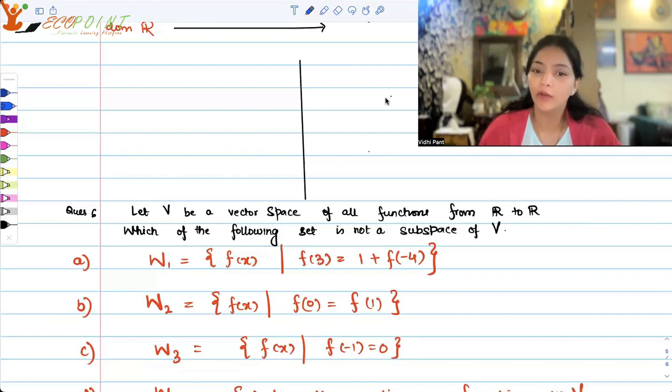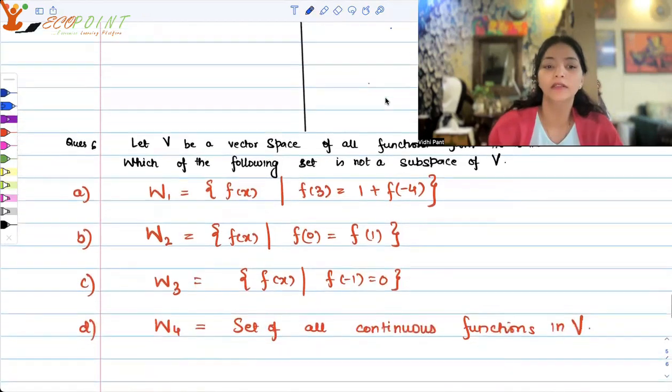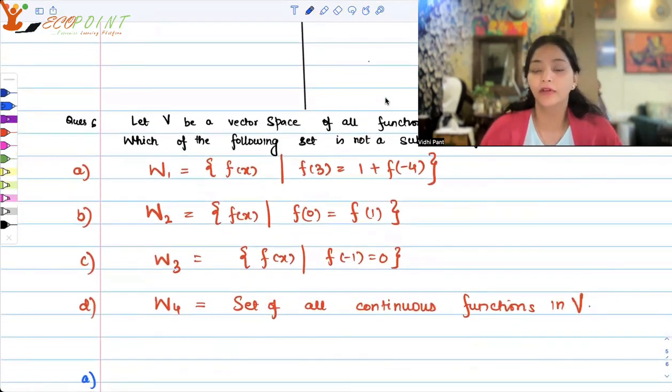First one is the set of all f(x) such that f(3) equals 1 plus f(-4). Second one is the set of all f(x) such that f(0) equals f(1). Third one is the set of all f(x) such that f(-1) equals 0. And the last option is set of all continuous functions in V.